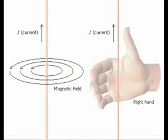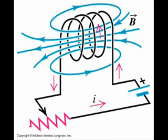If you run current through a wire, the motion of the electrons passing through the wire will produce a magnetic field around the wire. Take your right hand and point your thumb in the direction of the current, and as the electrons move in the direction of your thumb, they produce a magnetic field in the direction which your fingers curl. So if we take a coil of wire and trace the movement of the electrons passing through it using the right-hand rule, we can see how the magnetic fields all add up to produce a single large magnetic field. This is how electromagnetics work.